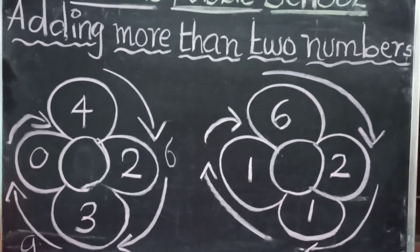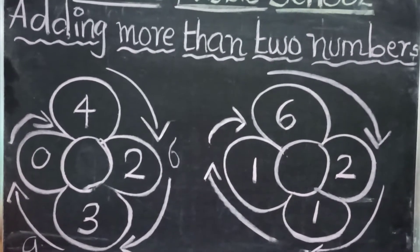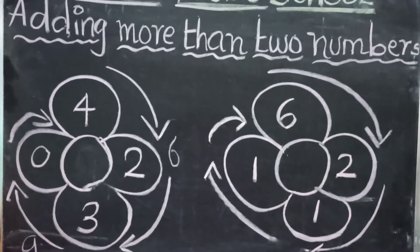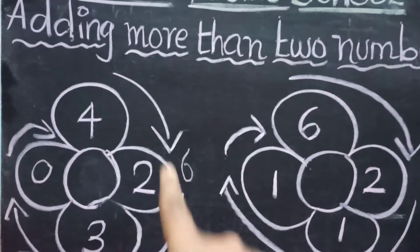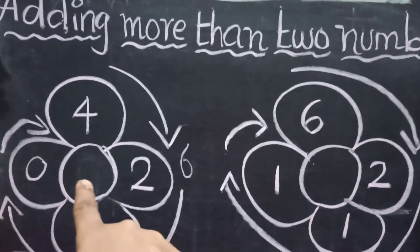Are you able to see the flowers? So we have got four numbers in each flower, right? So we are going to add all the four numbers together and get the answer.